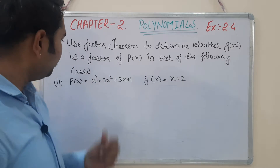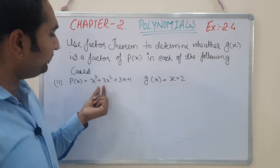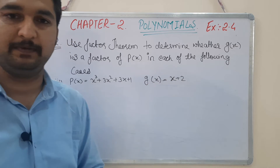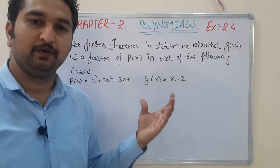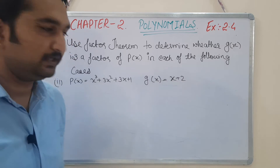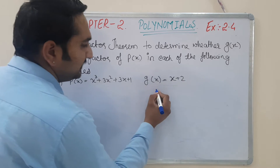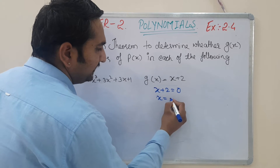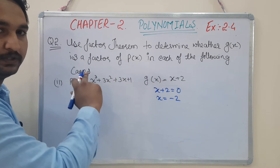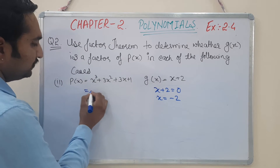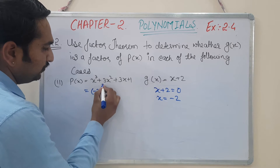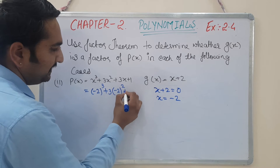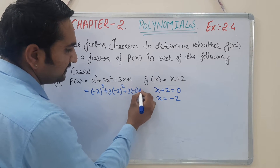Question number 2: p(x) = x³ + 3x² + 3x + 1 and g(x) = x + 2. We will find the value of x from g(x). So x + 2 = 0 gives x = -2. We will now put x = -2 into p(x): (-2)³ + 3×(-2)² + 3×(-2) + 1.